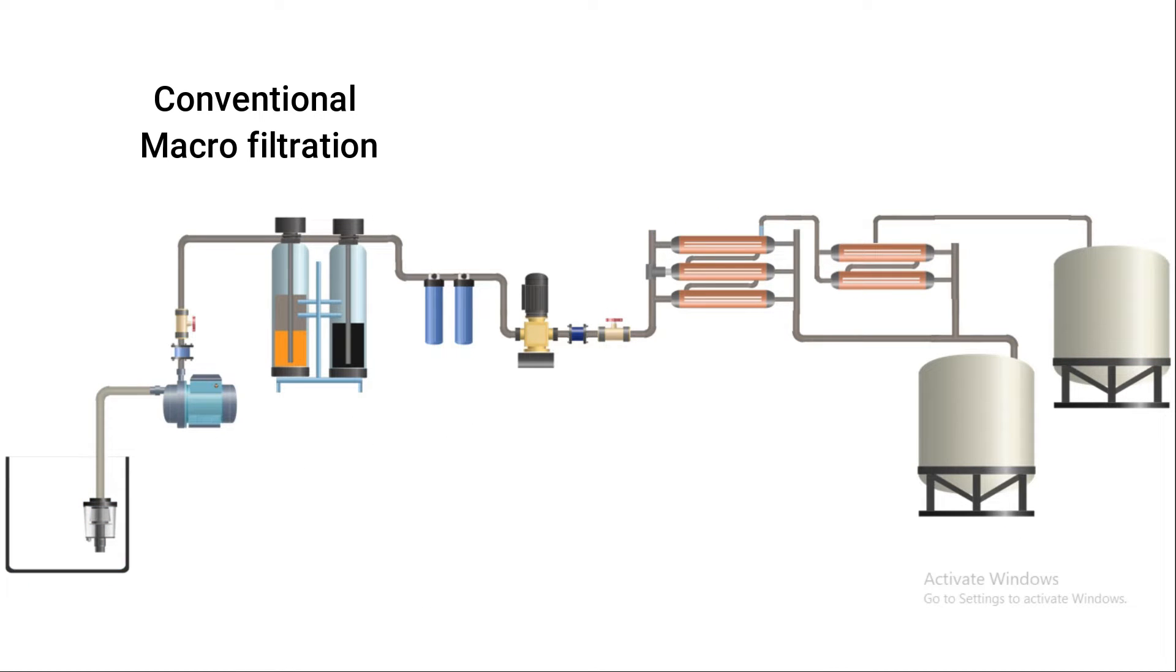Using a feed water pump, raw water is pushed at a constant pressure through the conventional macro filtration process. In macro filtration, suspended solids are removed by passing raw water through filter media in a perpendicular direction. The entire water flows through this media creating a single inlet and exit stream.